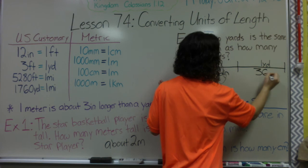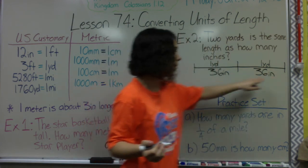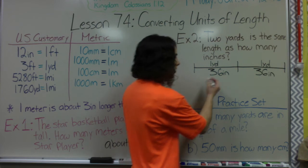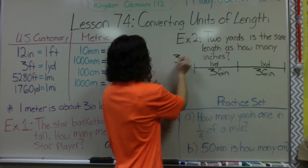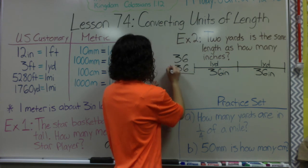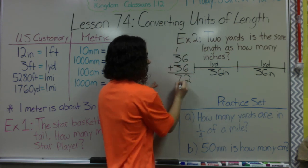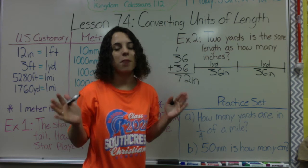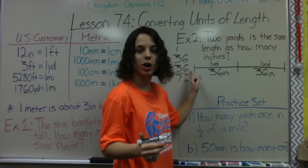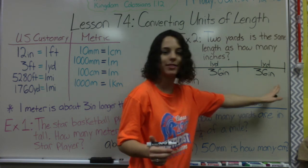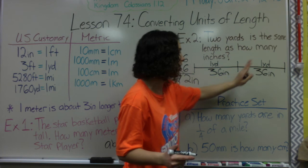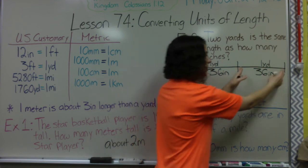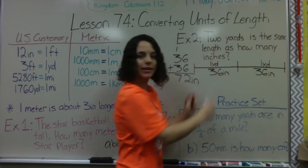Drawing a picture helps because now I can see I have 36 inches here and 36 inches here, so I need to add them together to get the total inches in two yards. 36 plus 36 equals 72, so there are 72 inches in two yards. Drawing pictures helps — it doesn't matter how long or short you draw it, as long as you label one yard and one yard so you can break it down and combine the parts.